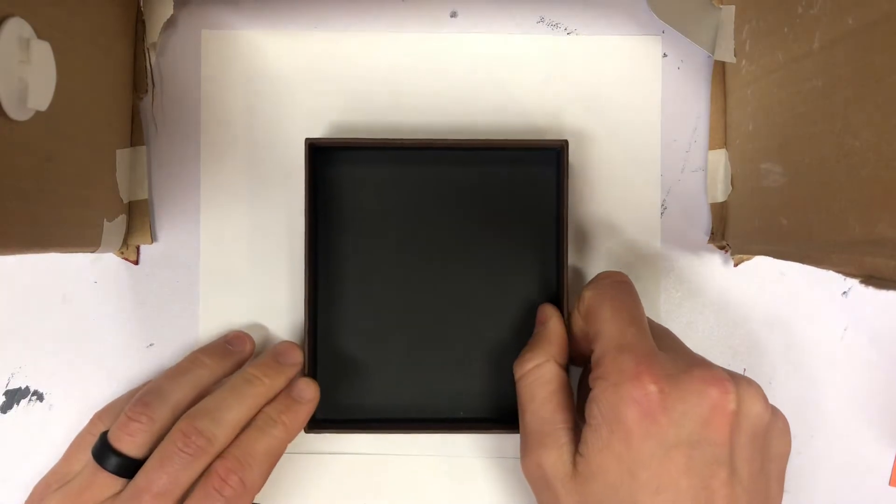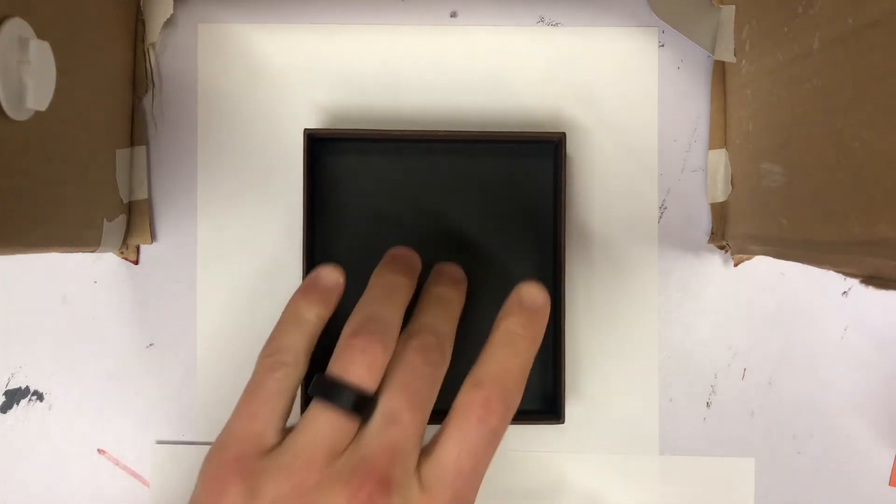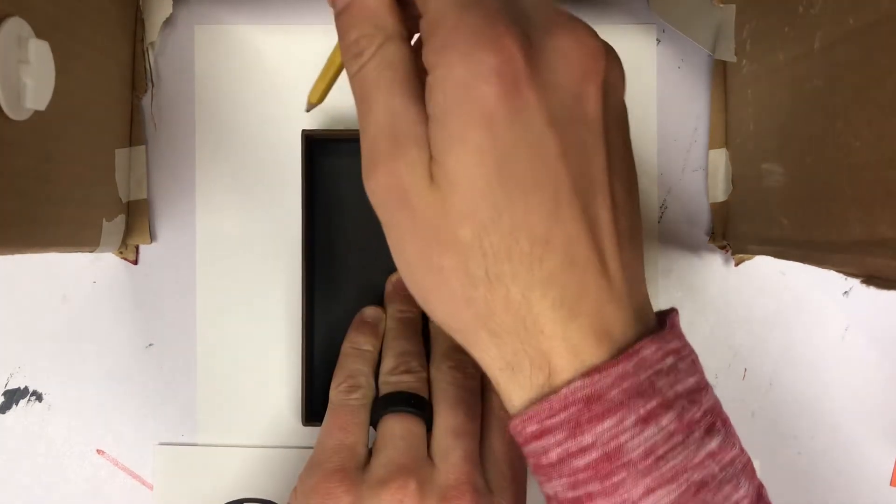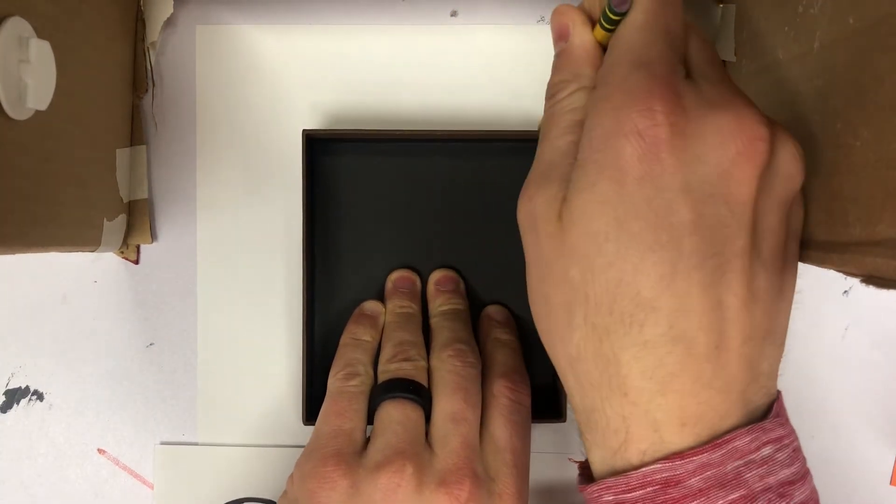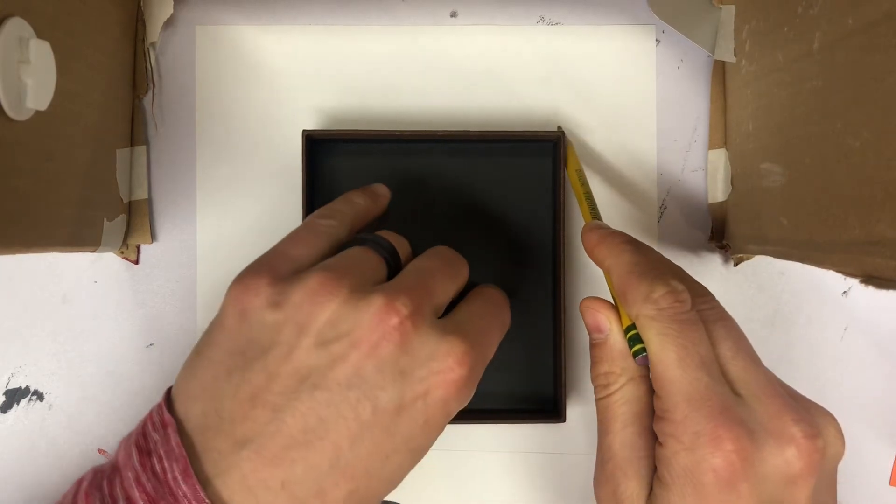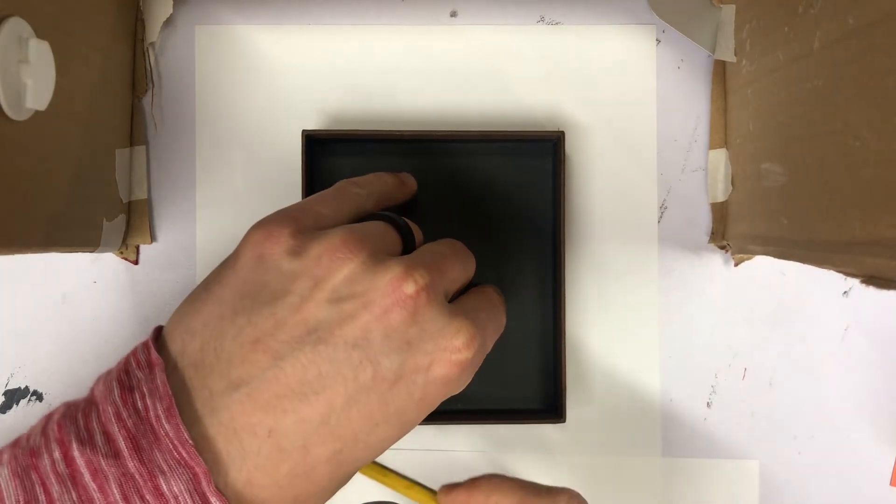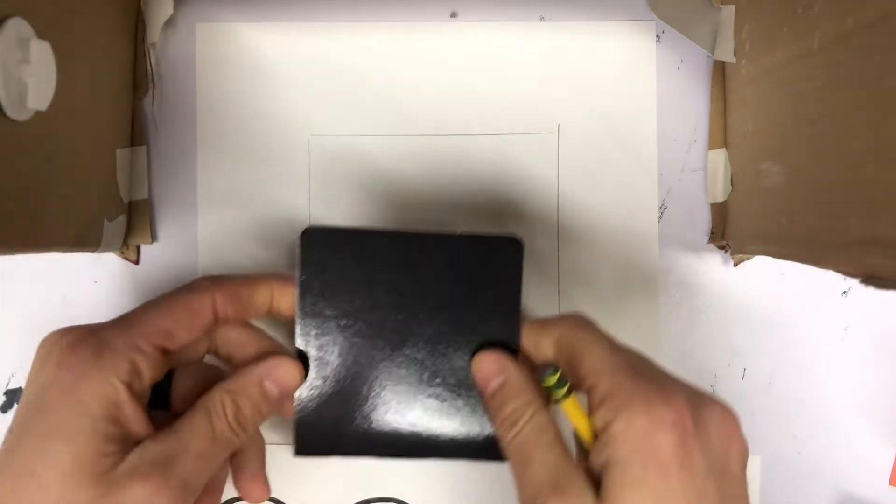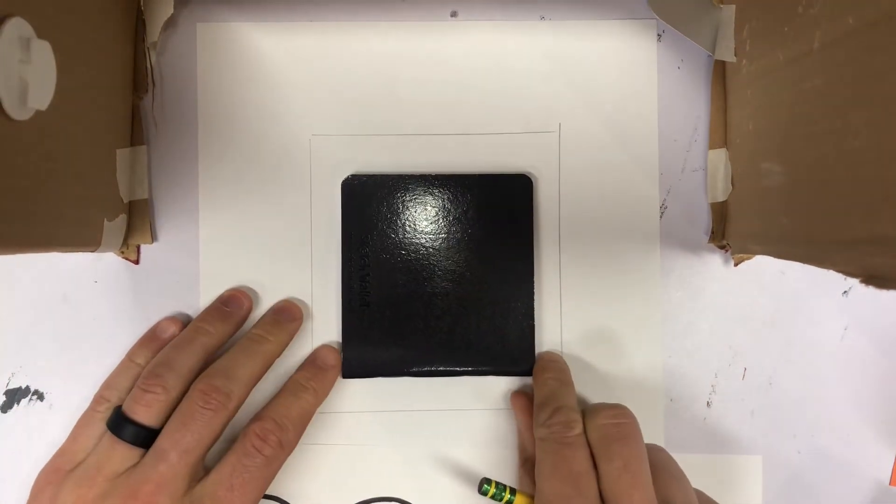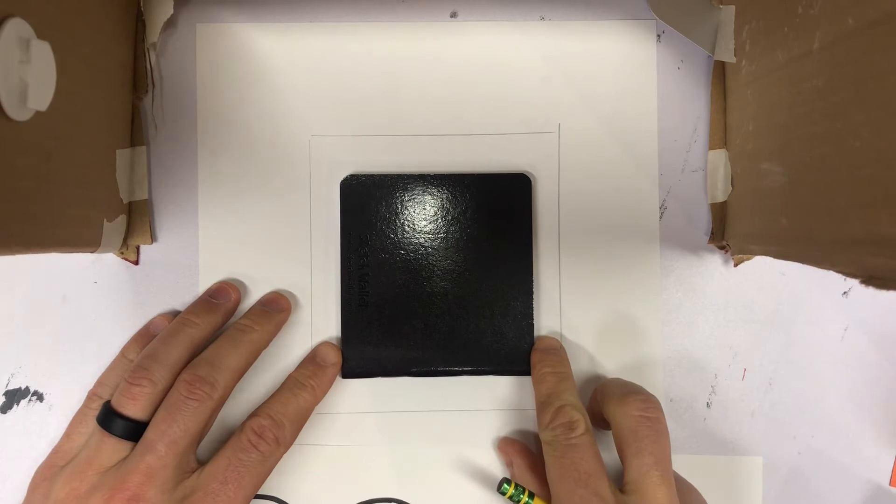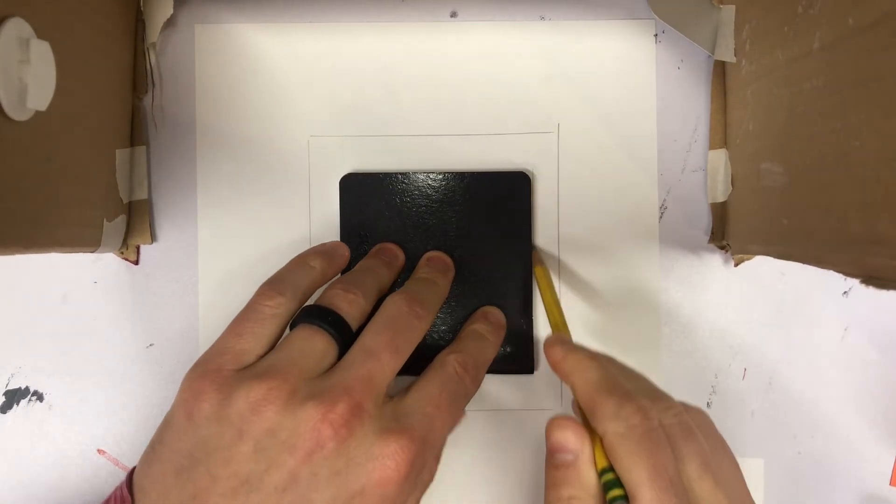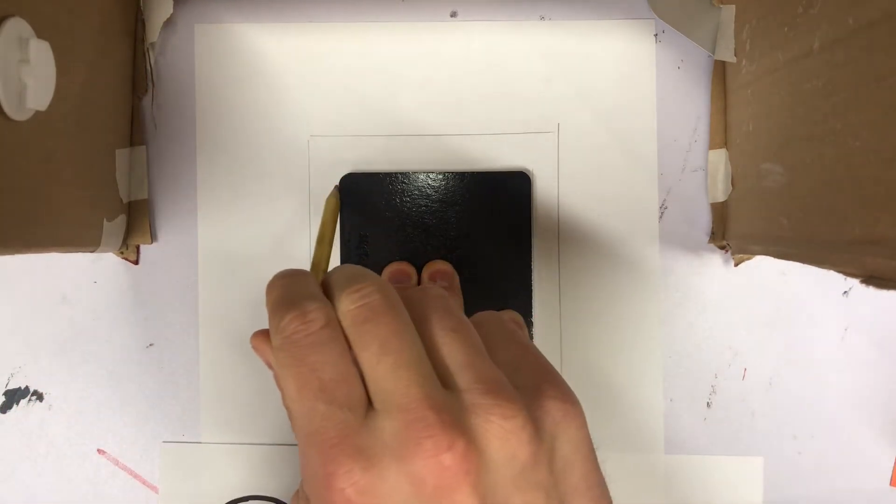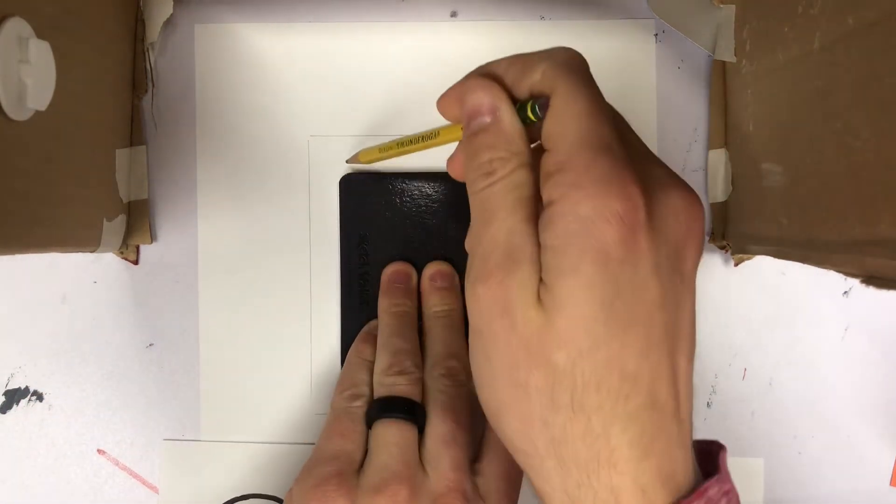You're going to want to trace the biggest square you have. Make sure whenever you're tracing you're holding it in place so it doesn't move. After you trace all the way around it, then you'll take the smaller square or a rectangle would work, and you will trace that. This is going to be your mouth.